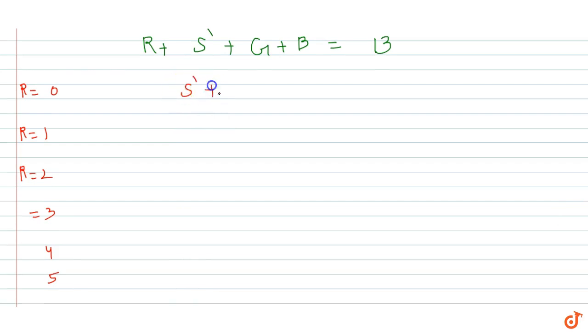Now we have S dash plus G plus B equals 13 when R equals 0. This means distributing among Shyam dash, Ghan Shyam and Balram 13 chocolates. This case gives 13, when R=1 it equals 12, when R=2 it equals 11, then 10, then 9, then 8.